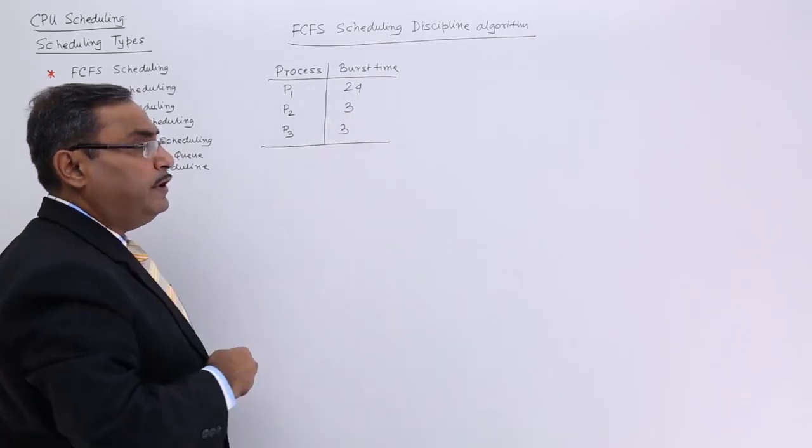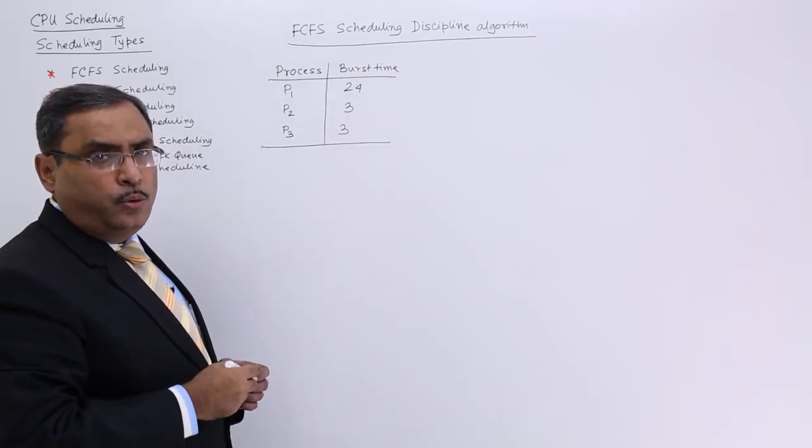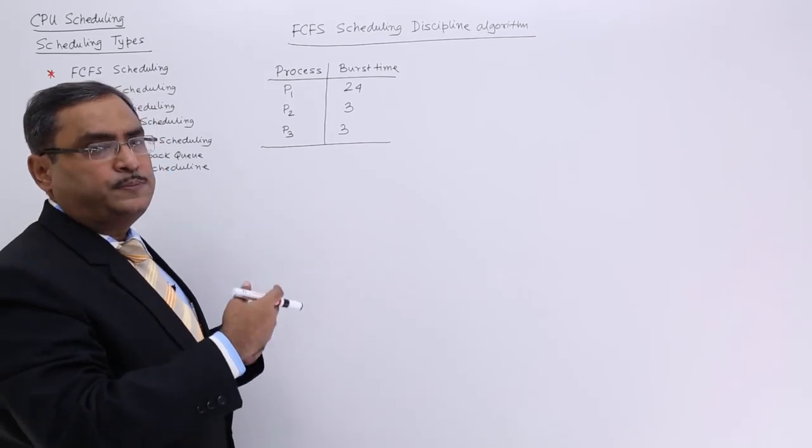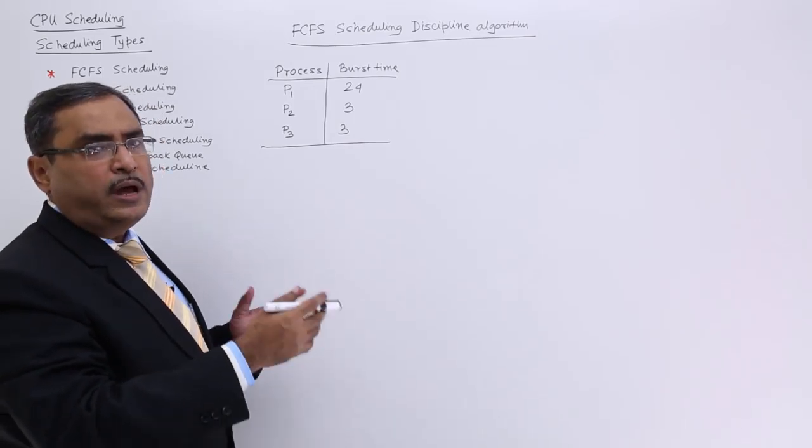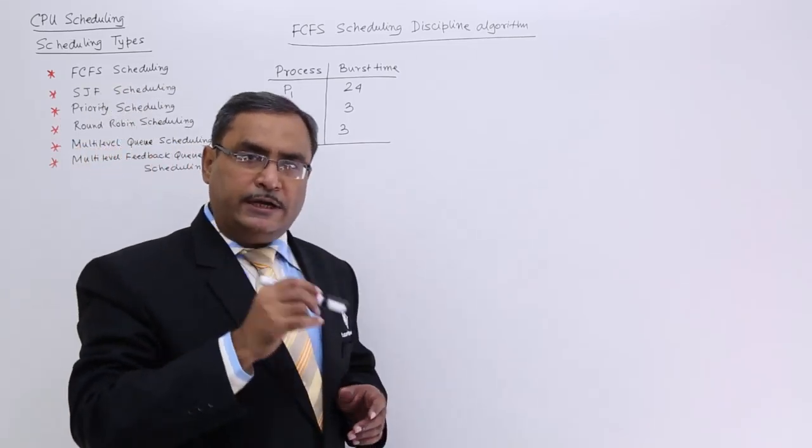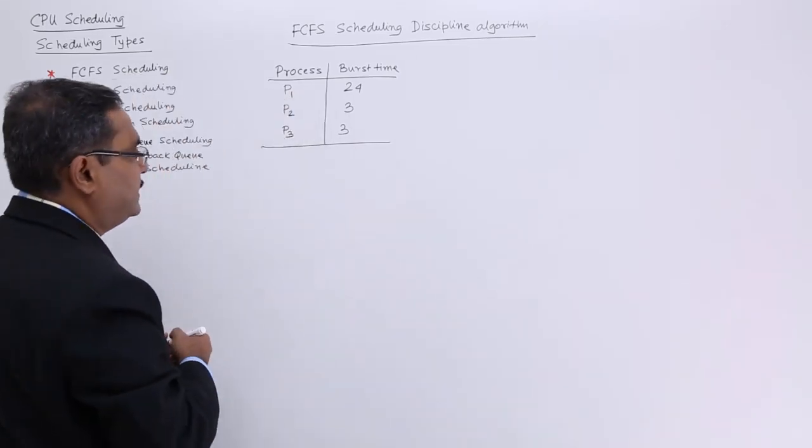We have the burst time given as 24, 3, 3. We need to determine the waiting time, turnaround time, response time, and whatever else we require. The average waiting time will be calculated after drawing the required Gantt chart.